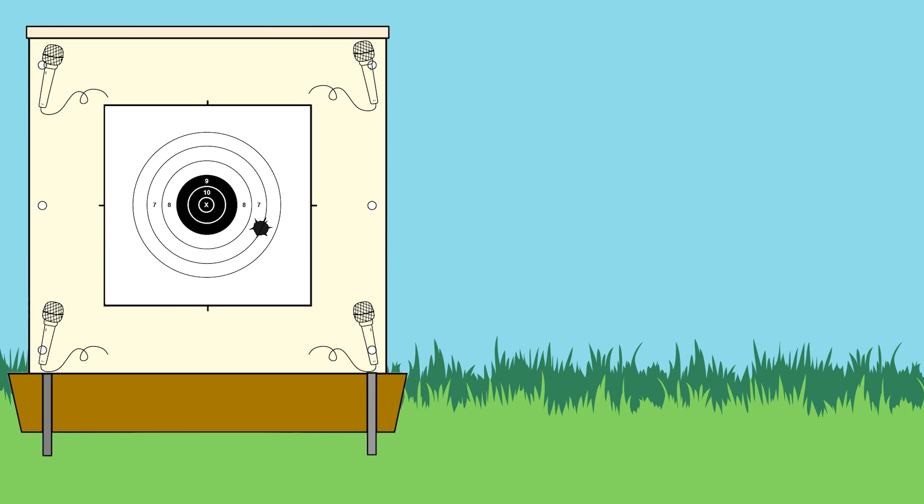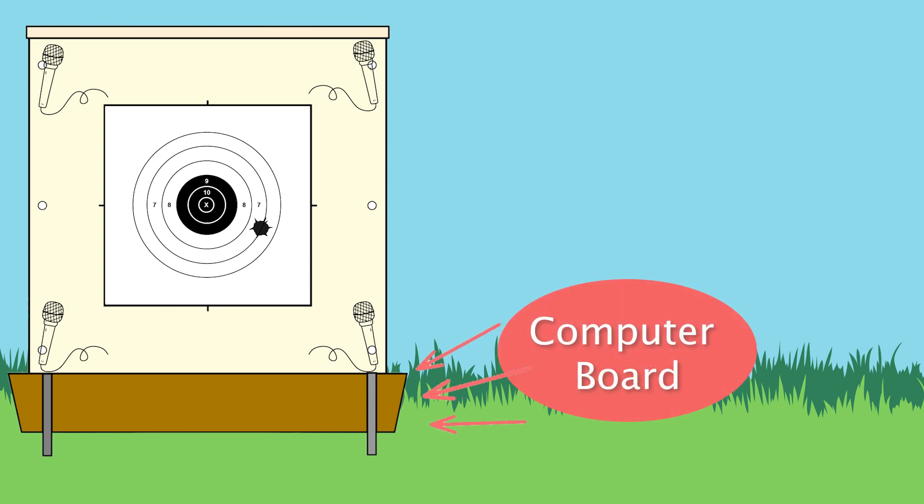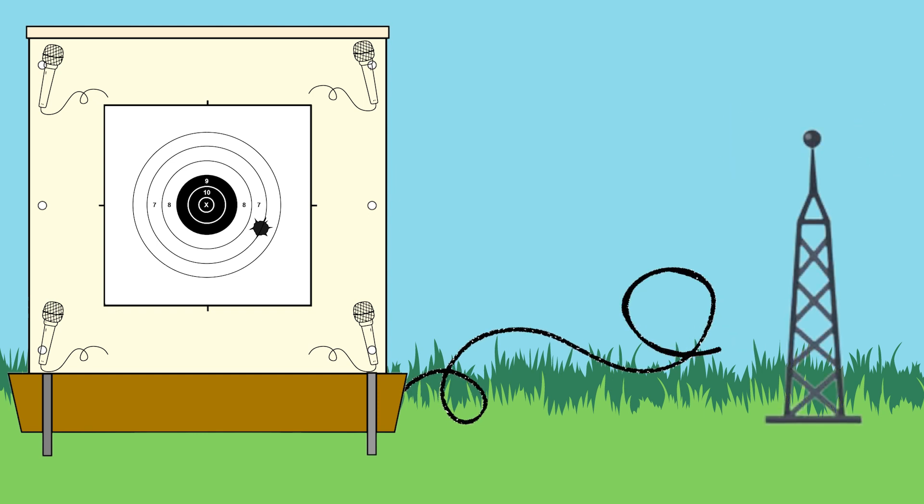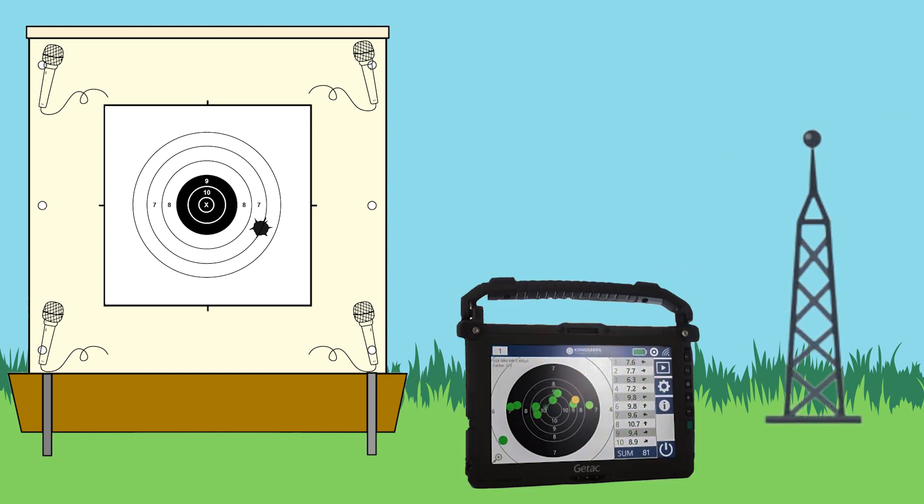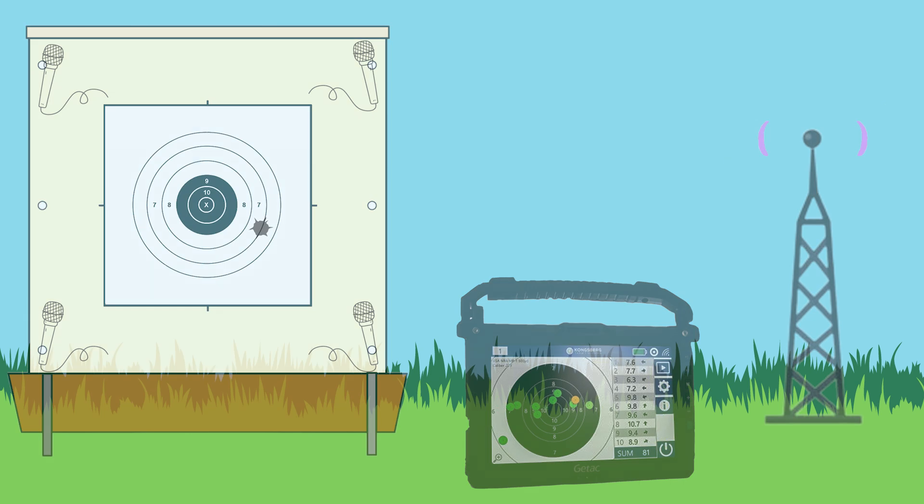There's a computer board in the bottom that processes that signal, electronically sends it to a router at the line which transmits it to the tablet at the line so that you can see where your bullets are hitting.